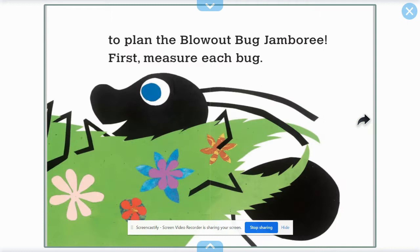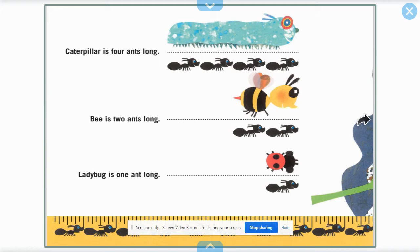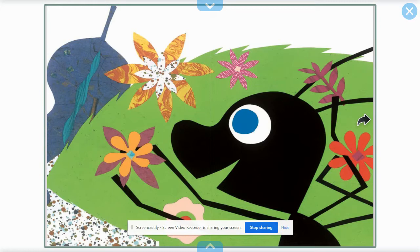It's time to plan the blowout bug jamboree. First, measure each bug. Caterpillar is four ants long. Bee is two ants long. Ladybug is one ant long.